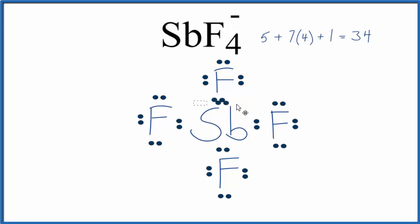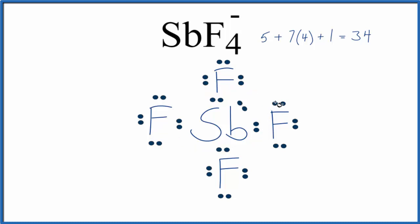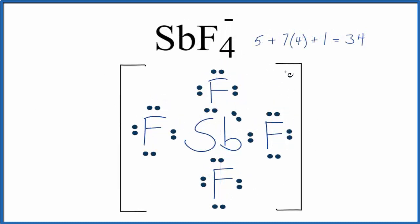So we're going to drop those two electrons in right here. We end up with 10 valence electrons on the Sb, but that's okay because it can have an expanded octet. We should put brackets around the structure and a negative sign to show it's an ion. This is the Lewis structure for SbF4-.